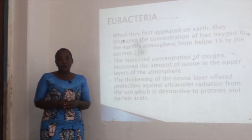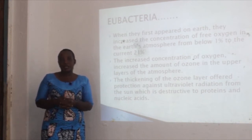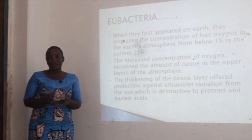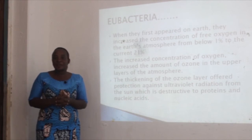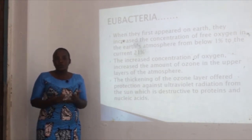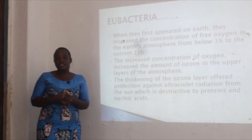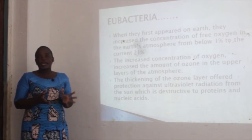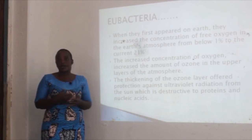In a quick review: the first organisms that appeared on earth are the archaea bacteria — that is why they are called the ancient bacteria. These bacteria were able to survive in the harsh environment of the early earth, for example, extremely high temperature and mostly the absence of oxygen. When the new bacteria appeared on earth, because of their photosynthetic activities, oxygen was produced as a byproduct, and the amount of oxygen in the atmosphere increased from below 1% to the current level of 21%.